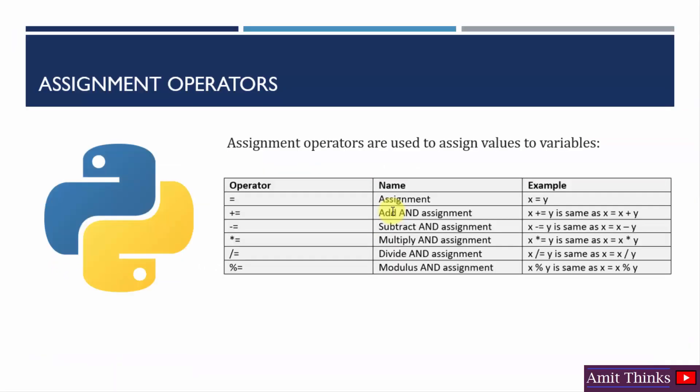Now we have reached the assignment operators in Python. Assignment operators are used to basically assign values to a variable. You can see the operators: assignment operator, add-assignment, subtract-assignment operator. Let us see them with some examples.